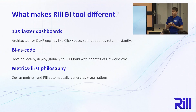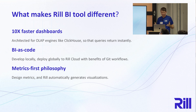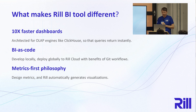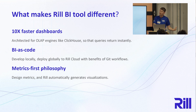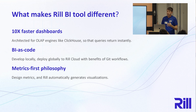What makes our tool different? First, we're faster. People have gotten so used to slow dashboards they don't know what they're missing until they see it. We also embrace BI as code — we target a persona of data engineers and analytics engineers who are comfortable with code, who can develop locally and then deploy globally. We also embrace a metrics-first philosophy. Metrics really are the core primitive in data. Tables are one step too low — people shouldn't be designing dashboards, they should be designing metrics and then exploring those metrics. Rill is, in essence, a metrics explorer, a metrics browser for data workers.